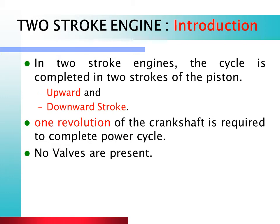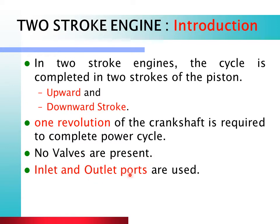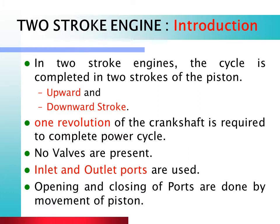In a 2-stroke engine, inlet and outlet ports are located in the walls of the cylinder, opening directly into the cylinder. The inlet and outlet ports are opened and closed by the movement of the piston itself — this is how they operate. When the piston moves and uncovers a port, that port opens. These are the main characteristics of 2-stroke engine construction and working.